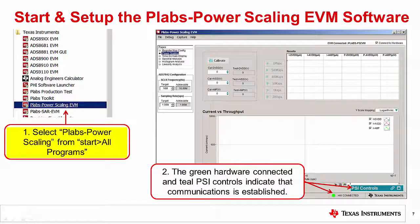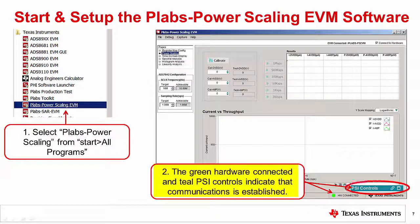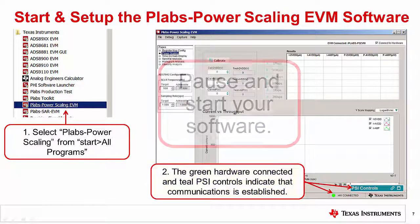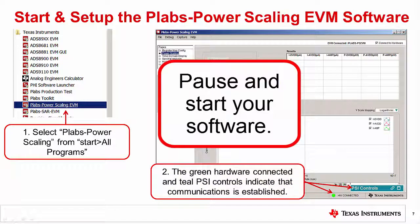Now start the PLabs power scaling software. If the hardware is connected correctly, you should see the green hardware connected indicator, and the PSI controls should be colored teal. Pause and start your software.